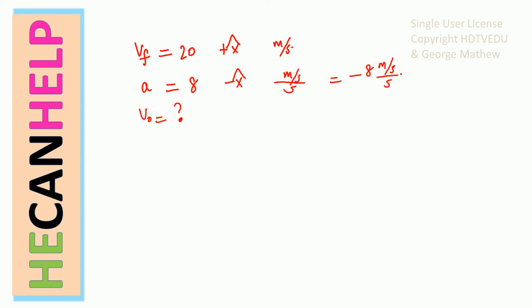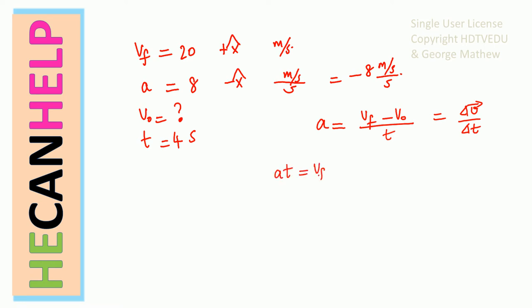The initial velocity we do not know. Time is 4 seconds. So we go to the definition of acceleration: acceleration is v final minus v initial, change of velocity divided by time. Cross multiply and you get a·t equals v final minus v initial. We are supposed to solve for the initial velocity, so v initial equals v final minus a·t.